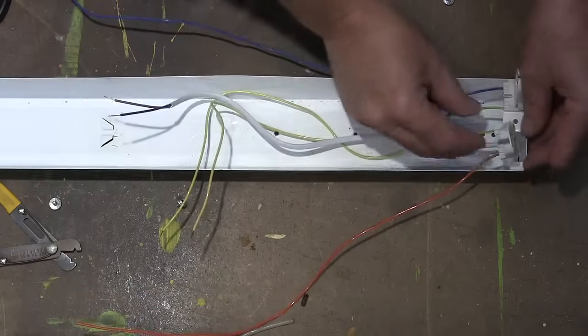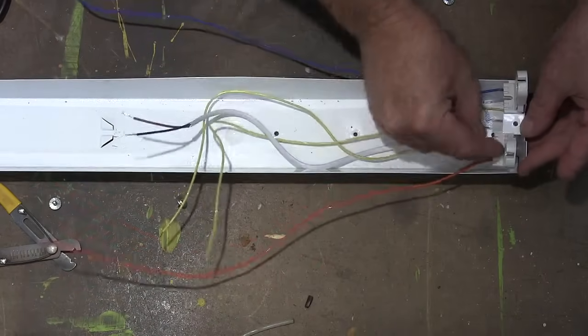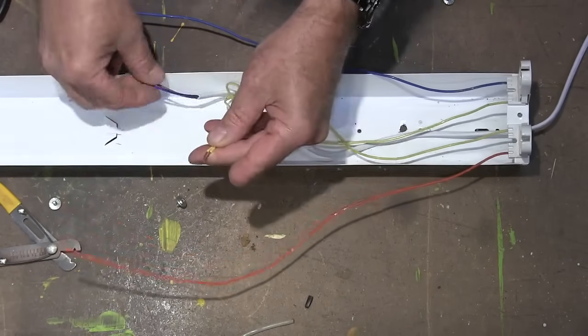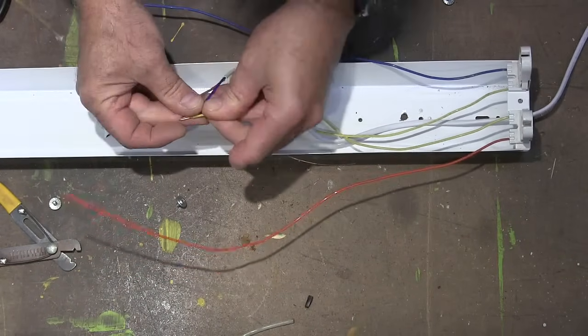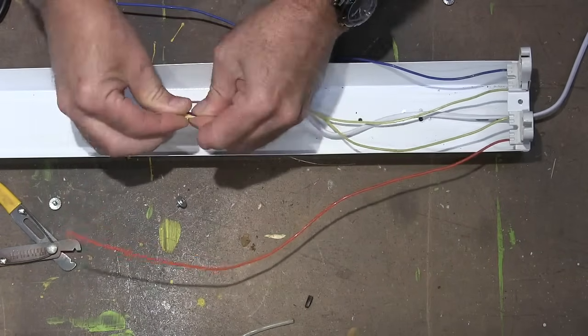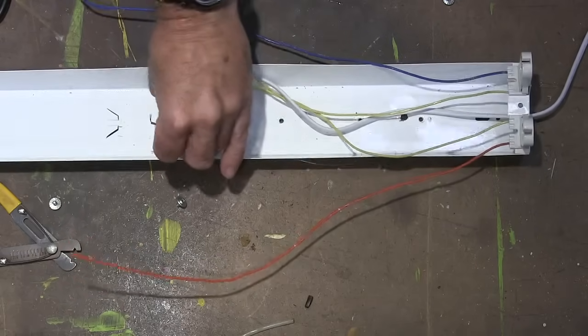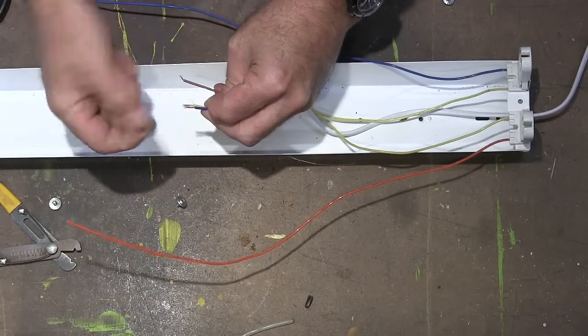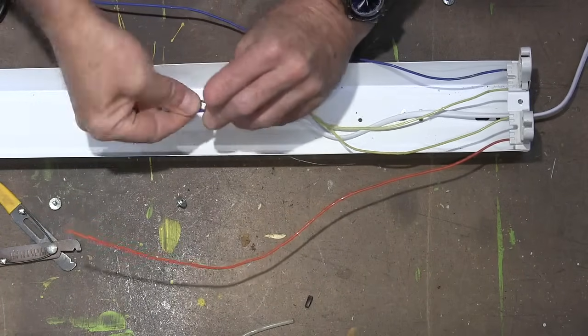We've taken one wire from each one of our tombstones. We've got these two, and we're just going to connect those to one of our wires. It doesn't matter whether you connect it to the white or the black. It makes no difference. Just twist them together a little bit.